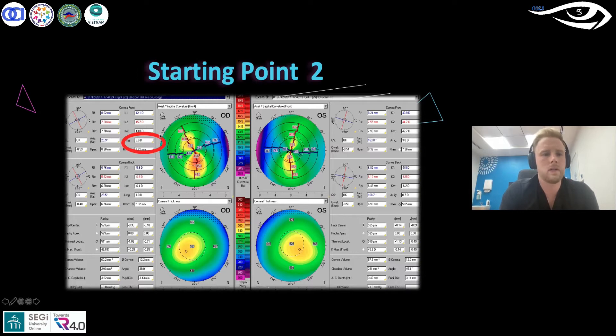If you look here, 42.1 and 45.7 is your flat and steep meridian, and that gives us an axis of 3.6 diopters. The K max gives us an indication of what's the steepest point of the cornea.